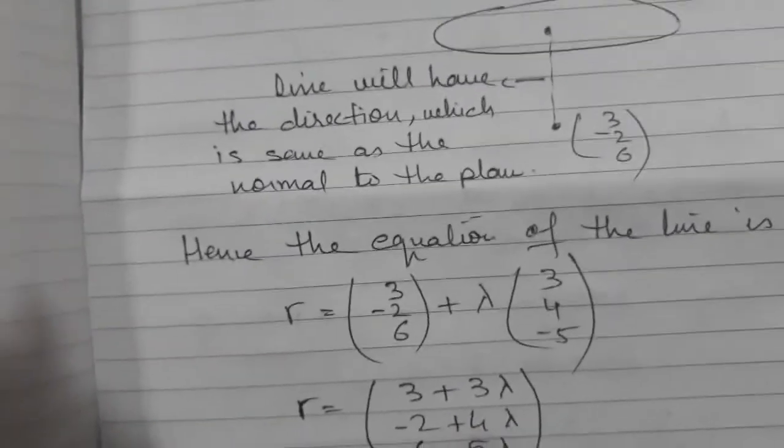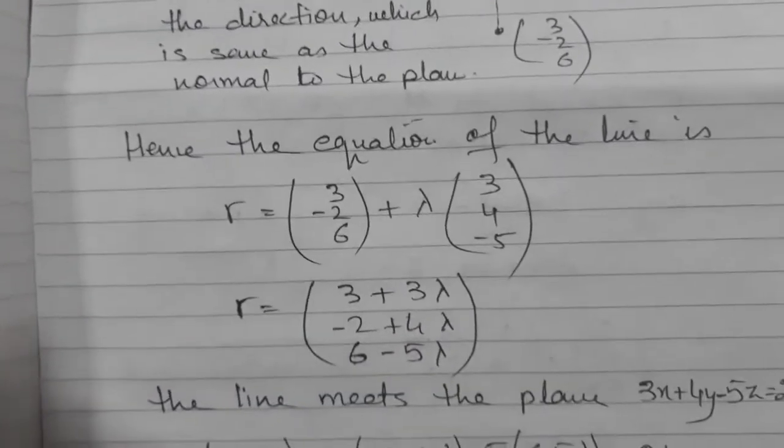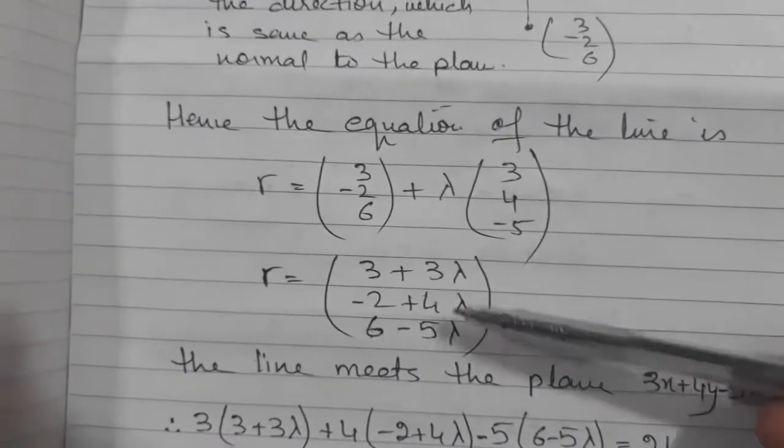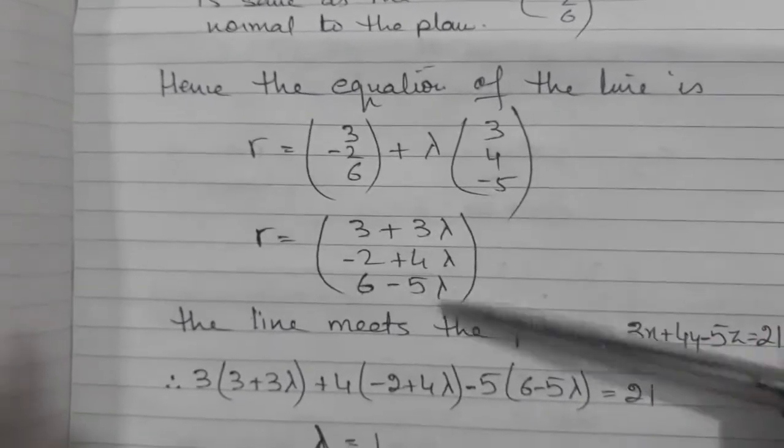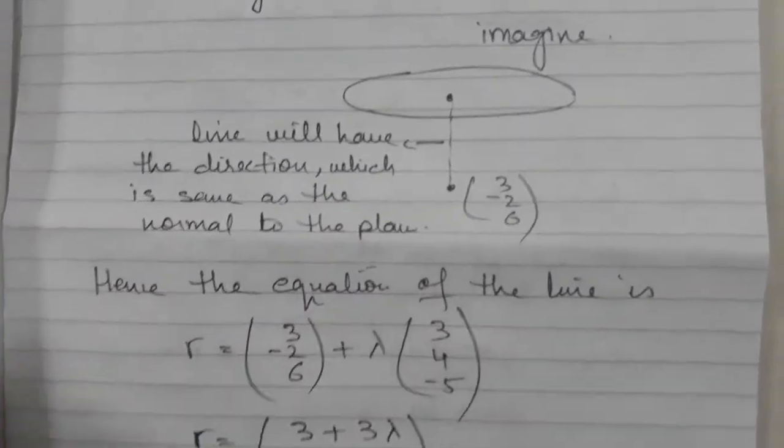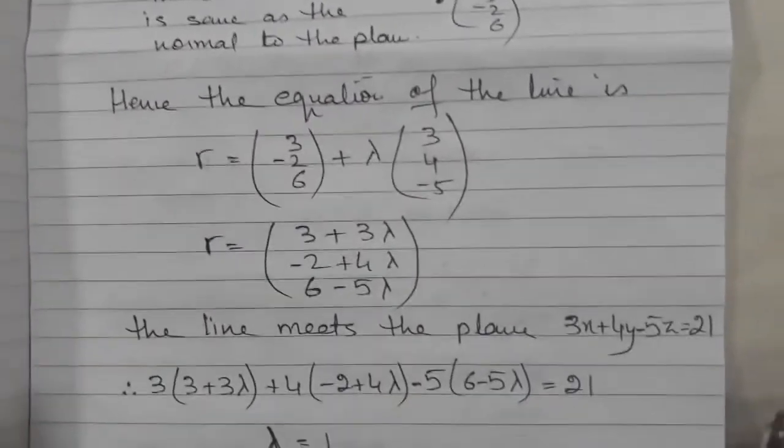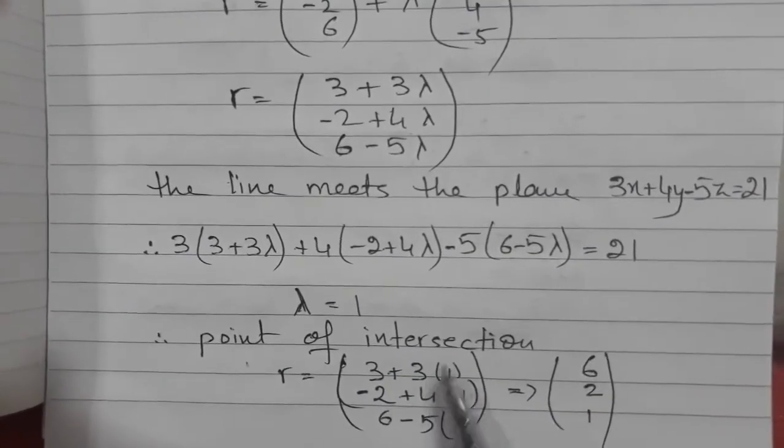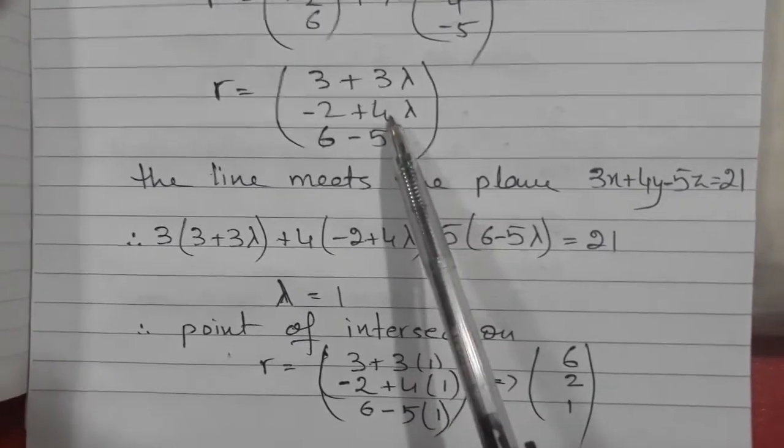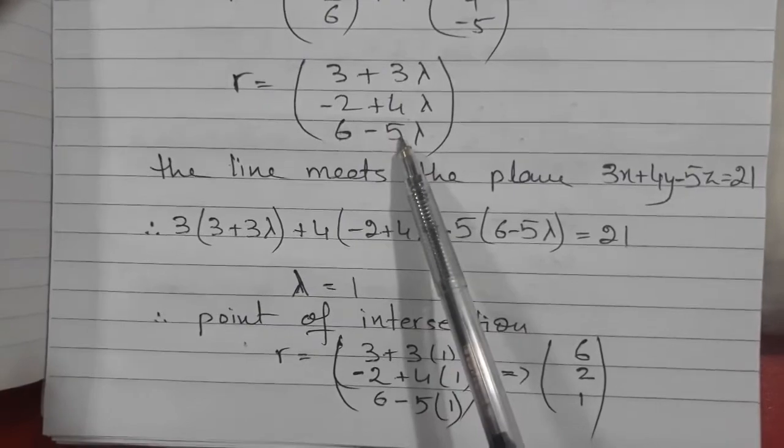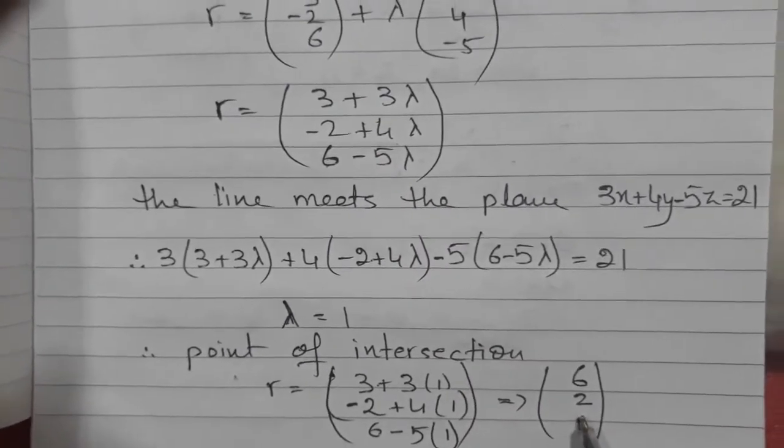Now this line is intersecting the plane. If I substitute the XYZ coordinates of the point in the plane equation, I can easily find out the value of lambda. After finding lambda, if I substitute it back, I will get the point where the line and the plane are meeting.